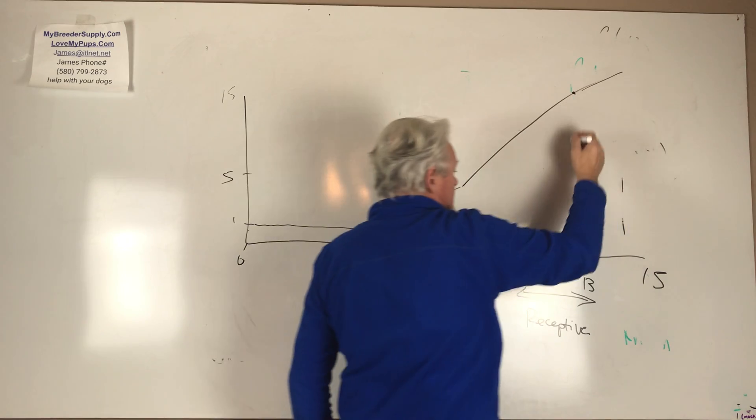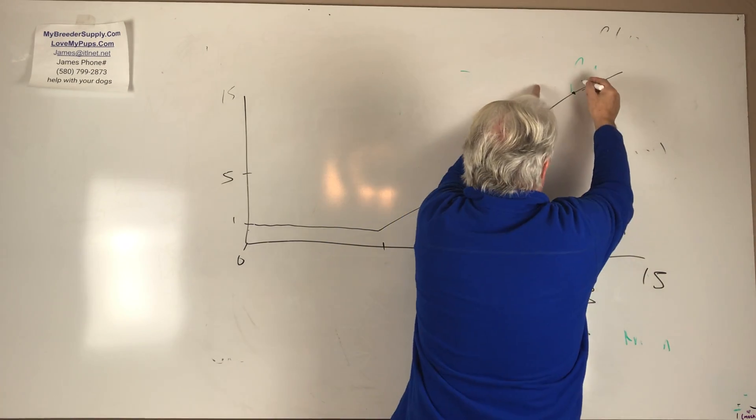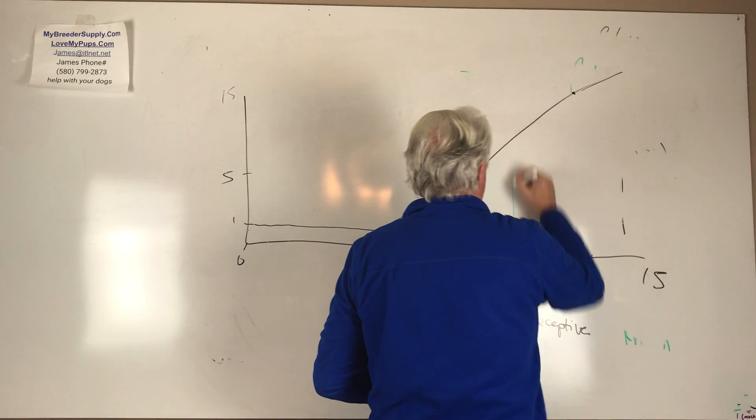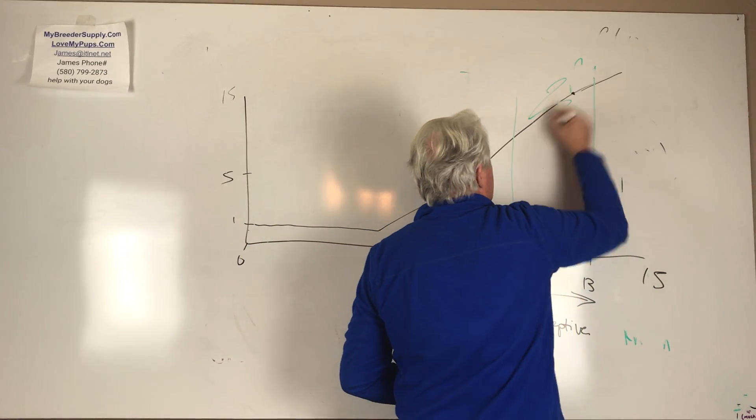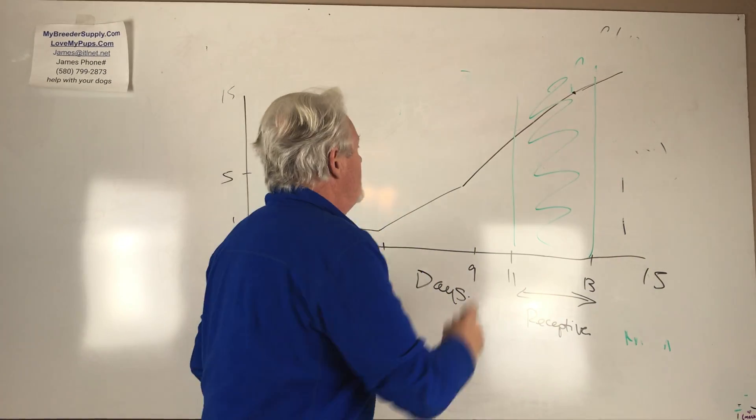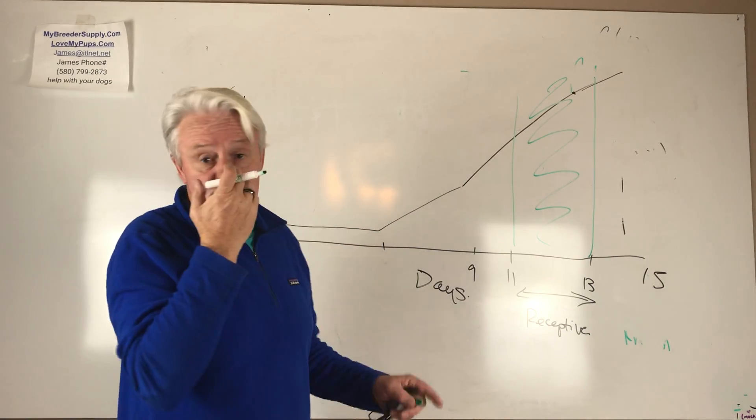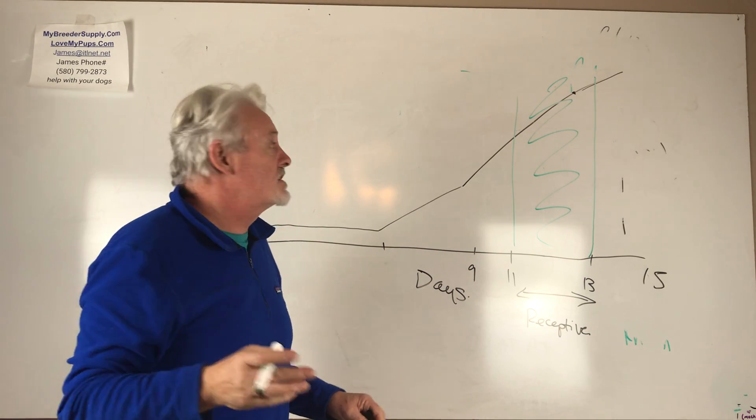So the question is, in this little narrow area right here, when we're saying this dog is ready to be bred, the behavior on both sides of it is pretty much the same. And so where the heck are you? Well, the answer to this, you've got really two ways you can do this. The first is, maybe three ways.